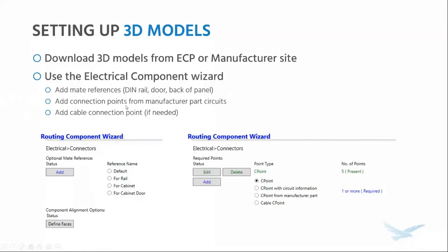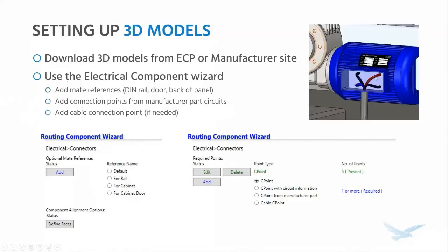There's also the option to add connection points, which represent the terminals of your part — this is where the wires are going to route to, and this is what's going to give you those accurate wire lengths. You have the option to associate these connection points to the terminals of the manufacturer part from your electrical library. So when your electrical designer defines the wiring information of a part in schematics, the 3D side knows exactly where those terminals are located in the 3D model and therefore where to route the wires. There's also another type called the cable connection point, which controls the termination of a cable jacket. A 3D model could be set up with both — the result would look like your cable jacket and the individual conductors.